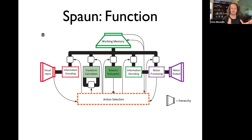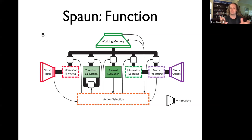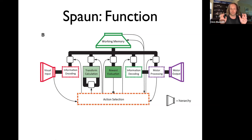Here we can see what each component is doing. We have a visual input hierarchy on the left-hand side, information encoding happening in vision-related areas, working memories, and things like transform calculations — figuring out what patterns are happening on the current input. On the output side, we have a conversion into motor commands to allow the model to express its answers.